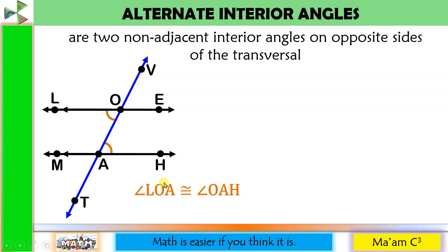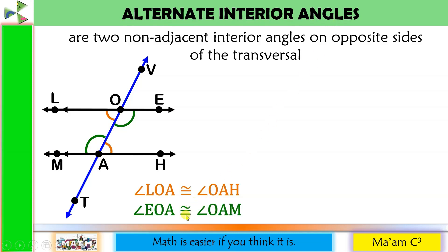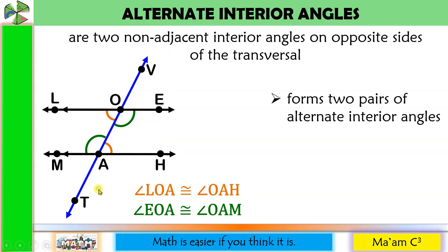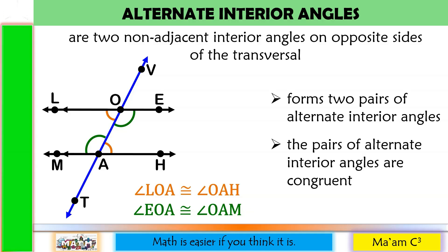Let's have another pair. Let us get from the right side this one, and its pair is on the left side. So angle EOA and angle OAM are alternate interior angles and they are also congruent. So when parallel lines are cut by a transversal, they form two pairs of alternate interior angles, and these two pairs of alternate interior angles are congruent.